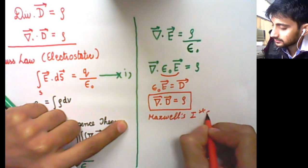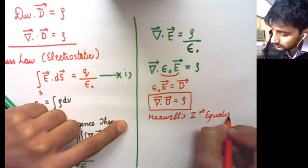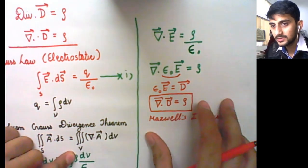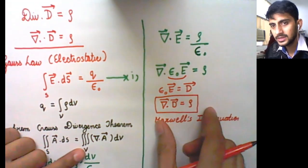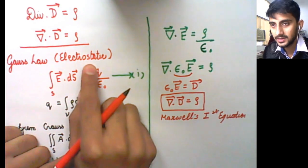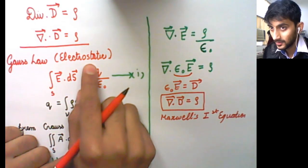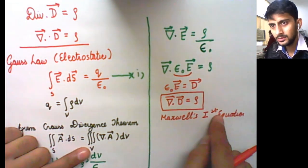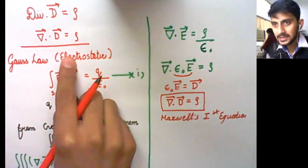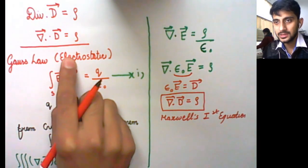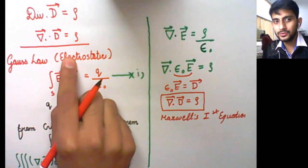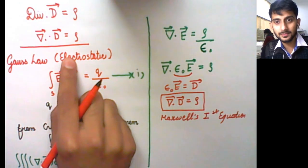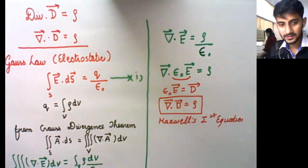If an exam asks you to derive Maxwell's first equation, you must start with Gauss's law in electrostatics. Indeed, Maxwell's first equation is the same as Gauss's law — or you can say Gauss's law is actually Maxwell's first equation. Maxwell essentially took it from Gauss and declared it the first equation of his theory.